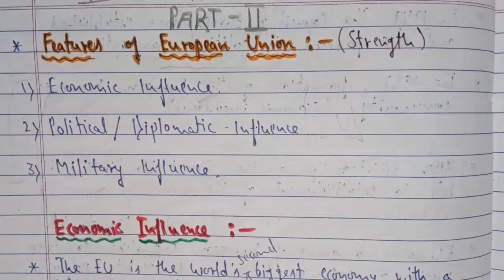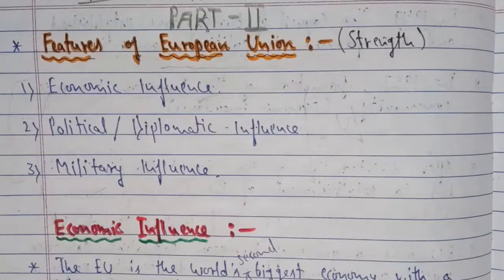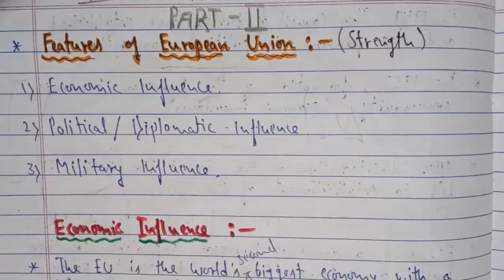First, look at the title 'New Centers of Power.' In the previous chapter on US Hegemony, we saw how the US showed dominance after the disintegration of the USSR in 1991 — militarily, economically, politically, and culturally. So there was a need for organizations or countries that could challenge US dominance. We began this chapter by starting with the European Union.